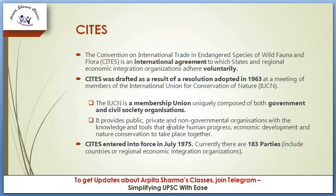So IUCN provides public organizations, private organizations, and NGOs with knowledge and tools necessary for human progress, economic development, and nature conservation. These are the goals of IUCN. It is a membership union in which government and civil society organizations work together, and it was from an IUCN resolution that CITES was drafted.